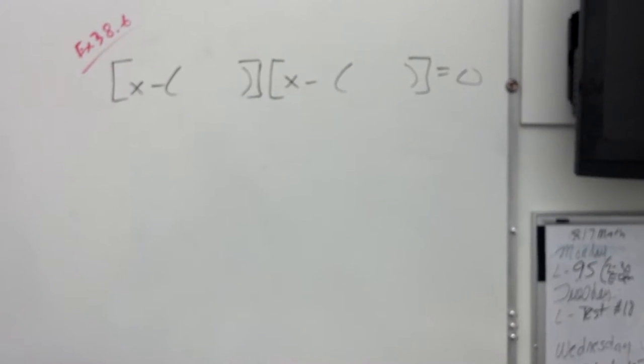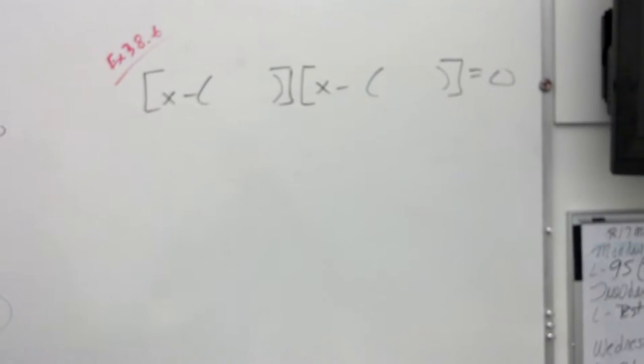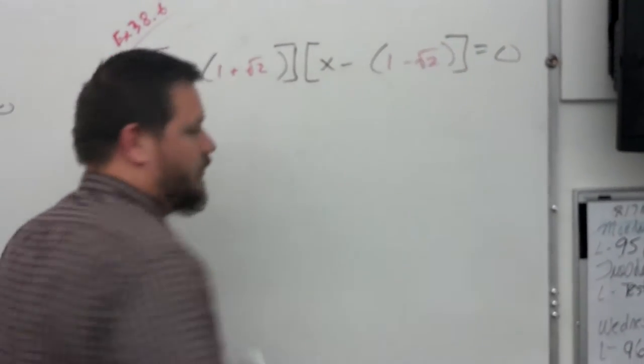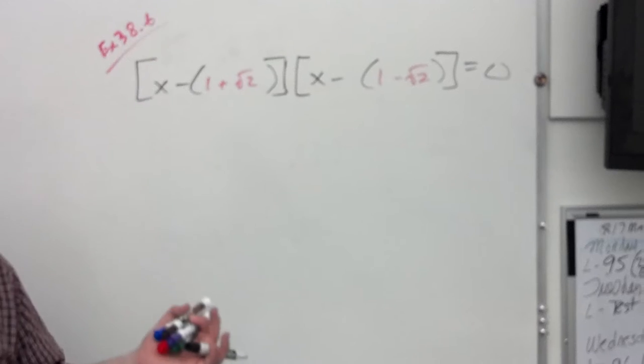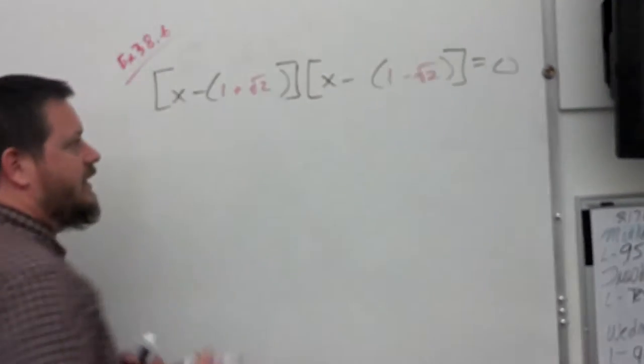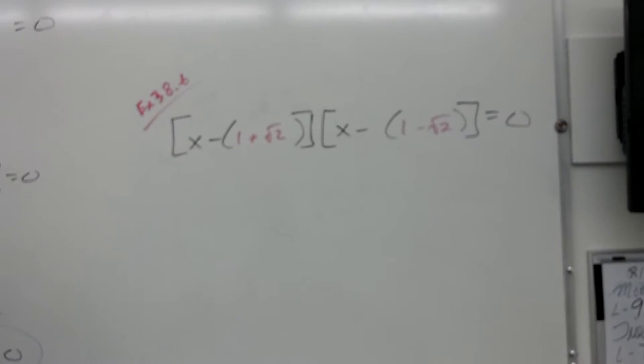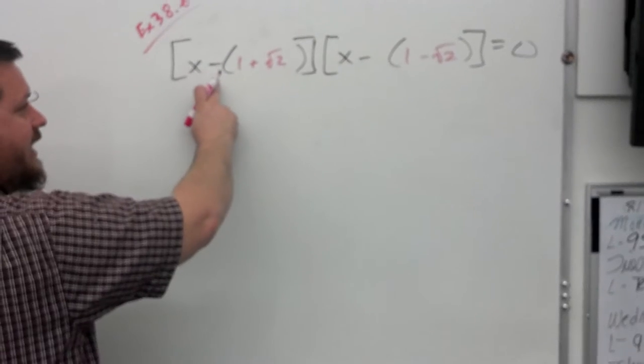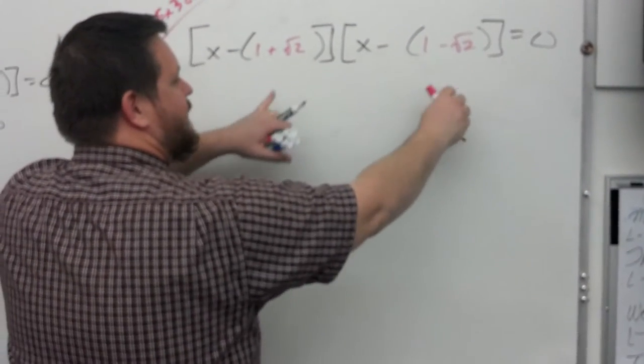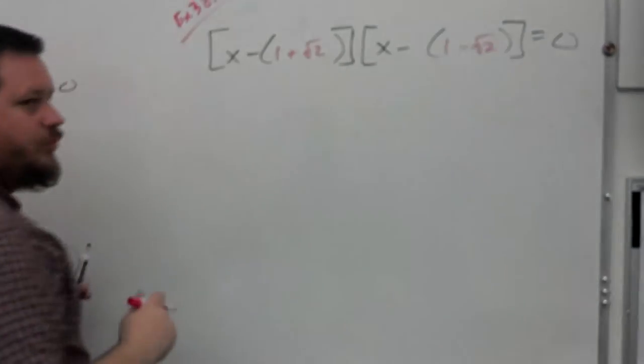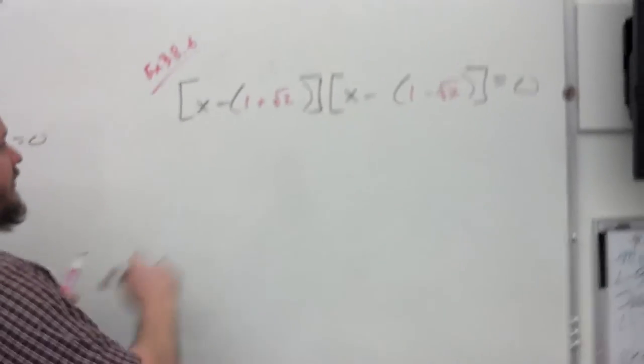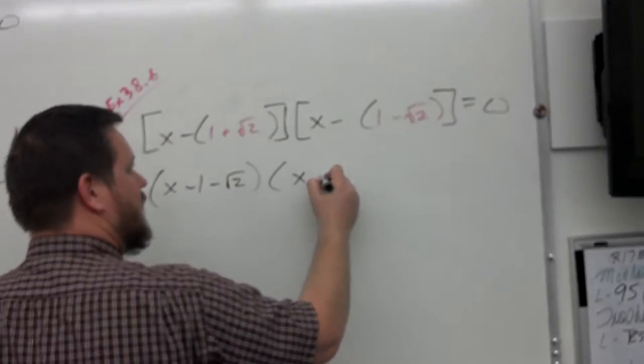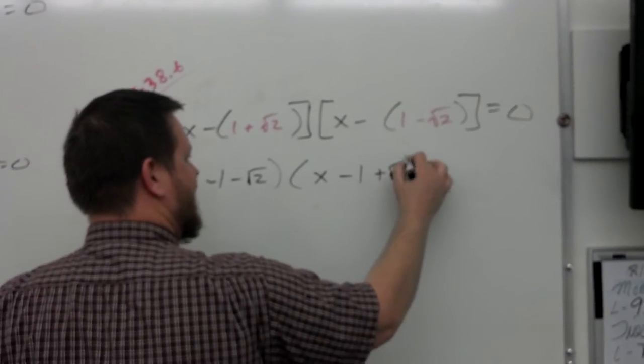Example 38.6. It wants the quadratic equation with a lead coefficient of one, whose roots are one plus radical two and one minus radical two. Oh. Eww. Same process, though. All I did was plug the two things into this form, and now I just have to multiply it out. Remember to distribute the negative.